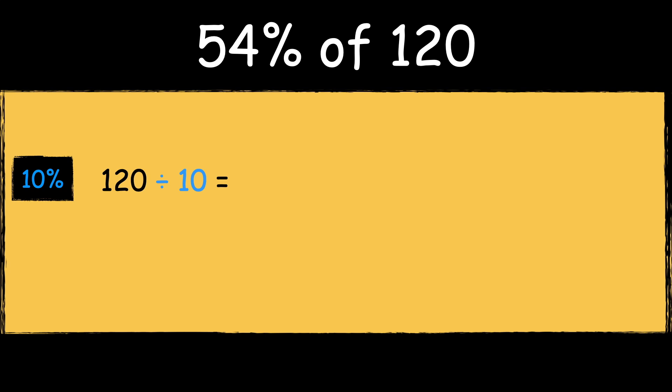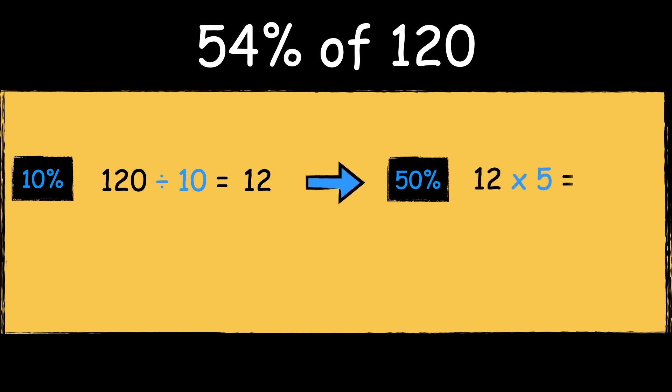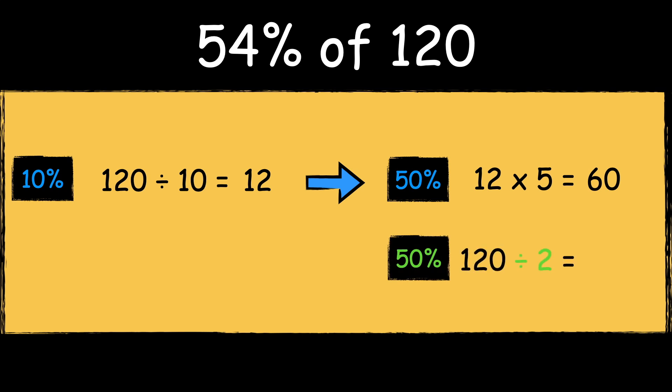Here's the last example: 54% of 120. First we find 10% by dividing the number by 10. 120 divided by 10 is 12. We can then multiply the answer by 5 to find 50%. 12 multiplied by 5 is 60. It's important to note that an easier way of finding 50% of a number is to just divide it by 2, so 120 divided by 2 is 60.